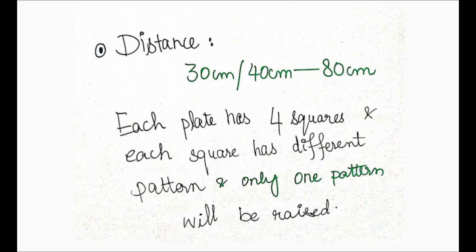You can find the value of stereopsis at different distances. If you measure stereopsis with the Frisbee plates at 30 cm, the value will differ from the value at 40 cm, and again from the value measured at 80 cm. You can perform the test at different distances.